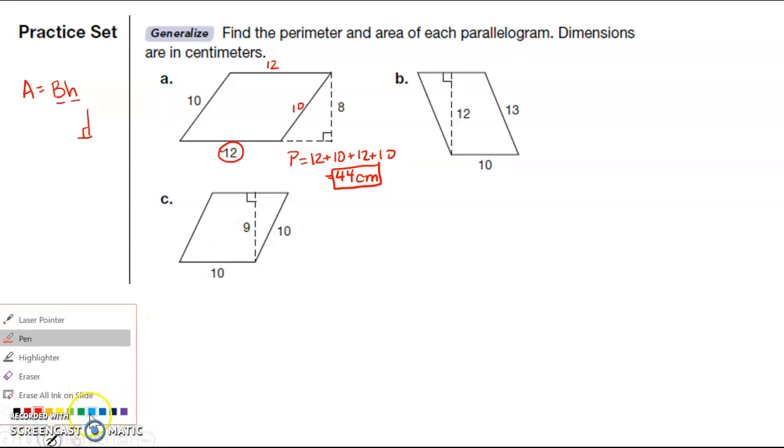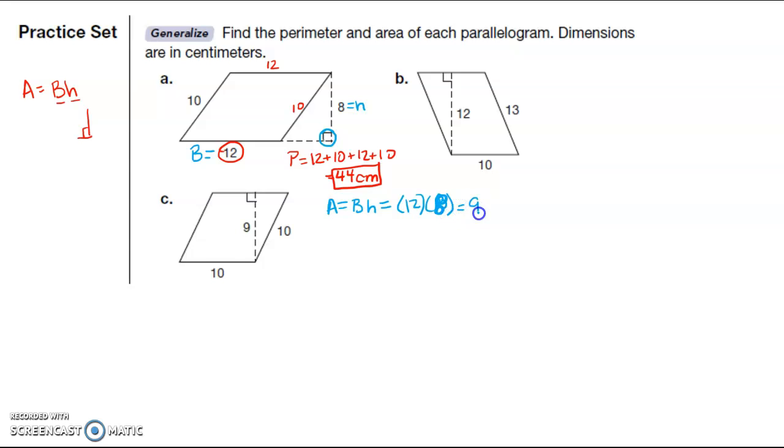Let me change colors here. And then the area of this parallelogram is going to be the base, which is here, times—now you see this 90 degree angle, that makes this the height. Be very careful that you don't choose this. So that means this is 12 times 8, which is 96 centimeters squared. And that's A.